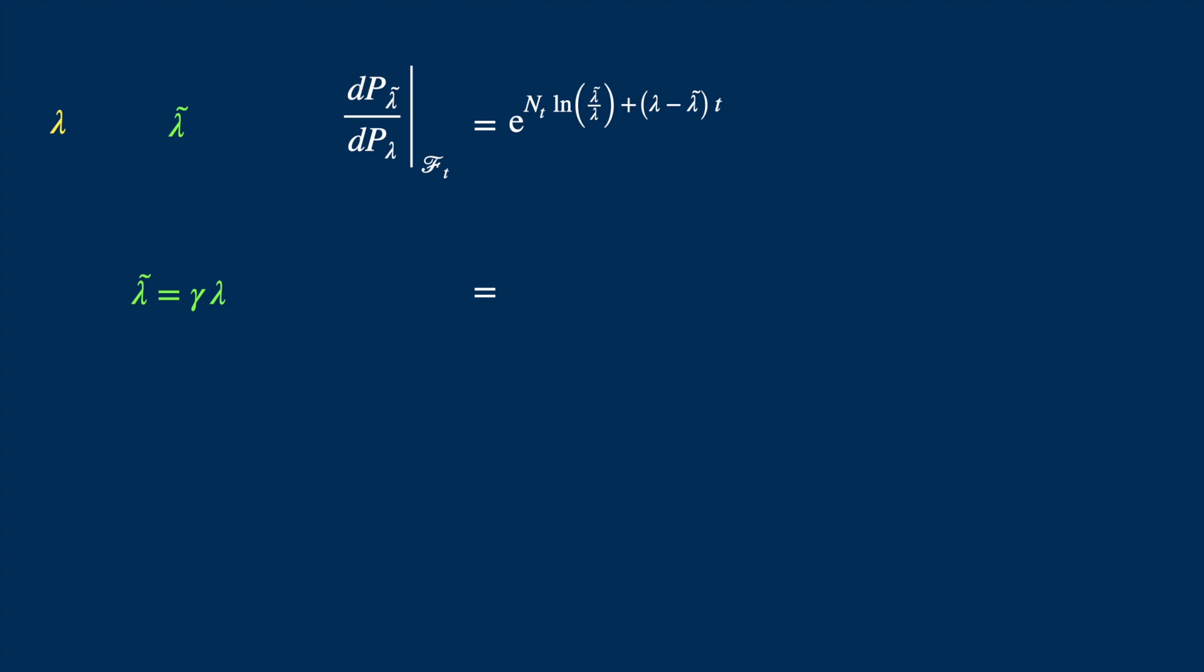And now we can substitute for the first tilde lambda, and then for the second. Now the two lambdas cancel. So we are left with the log of gamma. And then we factor out lambda in the second term. And this is the Radon-Nikodym derivative.